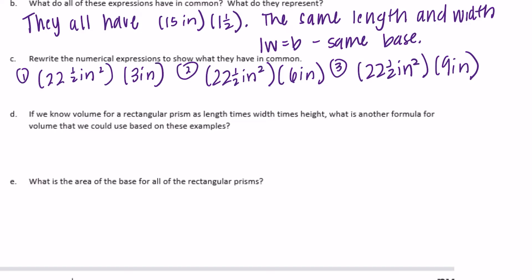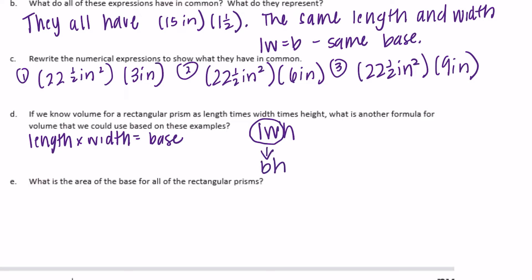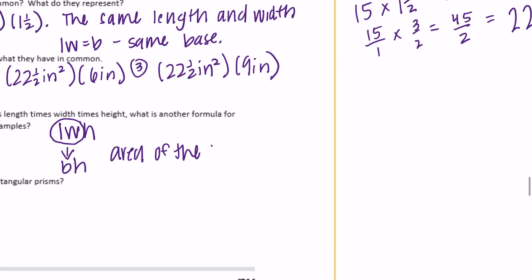Part D: If we know the volume formula for a rectangular prism is length times width times height, what's another formula we could use? What we just did is length times width equals the base. So instead of length times width times height, we can use the base times the height. So: area of the base times the height equals volume. Area of the base times height equals volume, because area of the base is length times width.